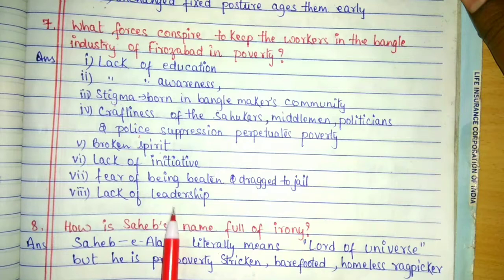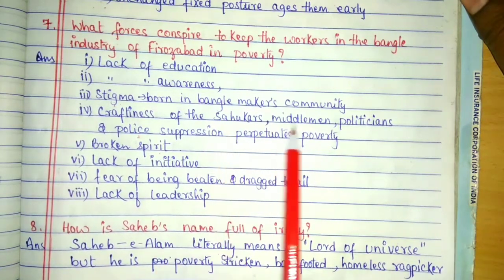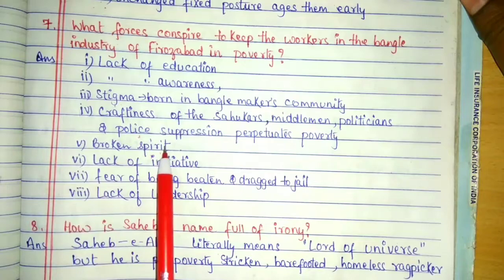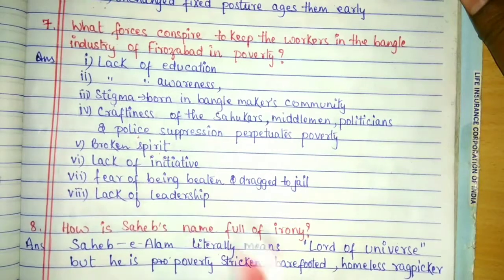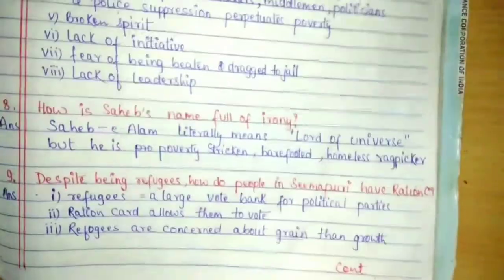They know that even if somebody starts a movement, they will be shattered by these four forces — the sahukars, middlemen, politicians, and police. That is the problem. Let's move to the next question.